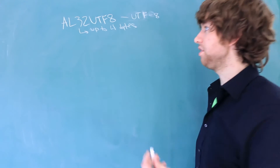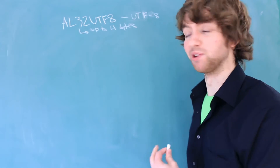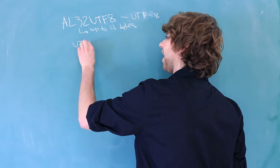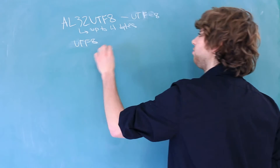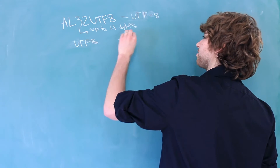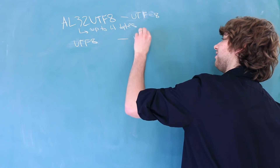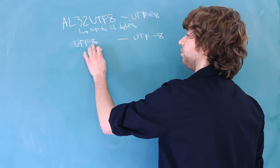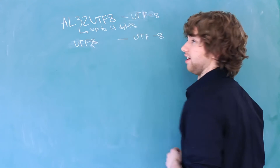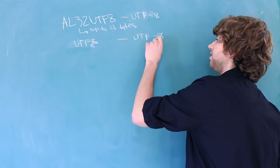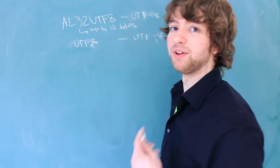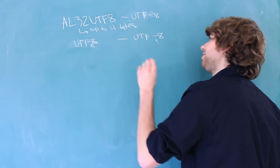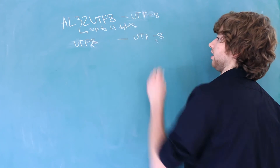Now there is another character set — and this is where it gets super confusing — called UTF8. The encoding that this character set uses is also UTF-8. So wait, what is going on here? Well, notice that this one does not have a hyphen and this does. So UTF8 without the hyphen in Oracle is talking about the character set, while with the hyphen is talking about the encoding.